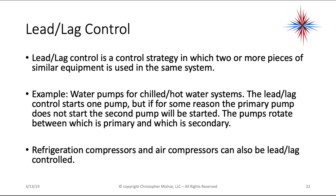Lead lag control is a control strategy in which two or more pieces of similar equipment are used in the same system. A great example is water pumps for a chilled or hot water system: lead lag control starts one pump, but if the primary pump does not start, the secondary pump is started. The pumps rotate between which is primary and which is secondary. Refrigeration compressors and air compressors can also be lead lag controlled.